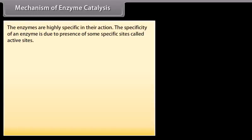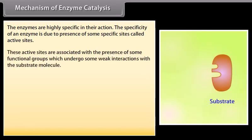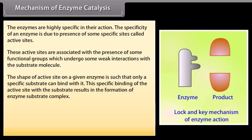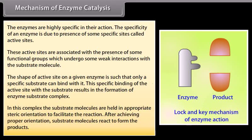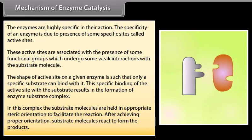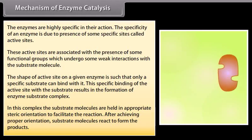Enzymes are highly specific in their action due to the presence of specific sites called active sites. These active sites have functional groups that undergo weak interactions with the substrate molecule. The shape of the active site on a given enzyme is such that only a specific substrate can bind with it. This specific binding results in the formation of an enzyme-substrate complex, in which substrate molecules are held in appropriate steric orientation. After achieving proper orientation, substrate molecules react to form the products. Product molecules, having no affinity for the enzyme surface, immediately leave the surface so that fresh substrate molecules can bind with the active site.